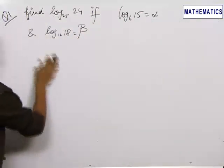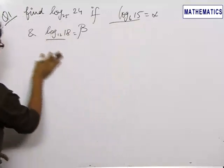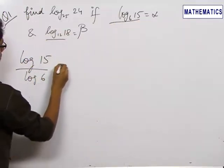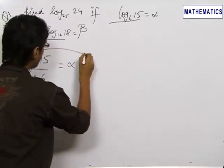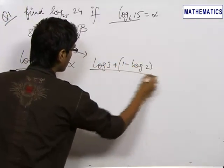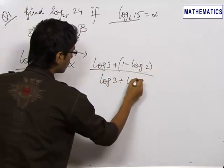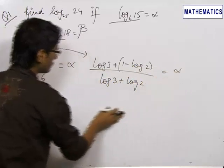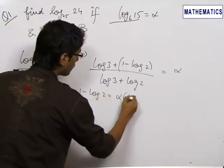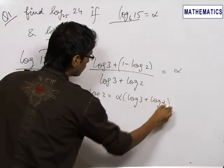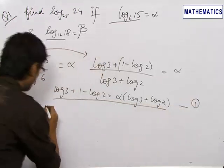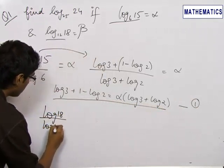To proceed, we convert both logarithms to base 10. So log 15 upon log 6 equals alpha, which we write as (log 3 + log 5) upon (log 3 + log 2) equals alpha, where log 5 = 1 minus log 2. So log 3 + 1 minus log 2 equals alpha times (log 3 + log 2). This is our first equation.